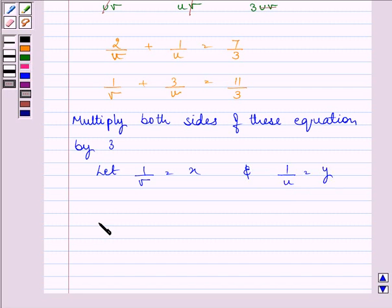So now, we'll be having 6x plus 3y is equal to 7 and 3x plus 9y is equal to 11. Let's say this as the third equation and this as the fourth equation.